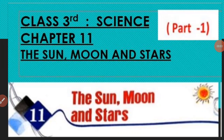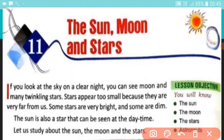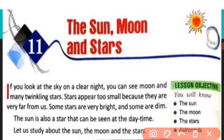Hello everyone, today we are going to start a new chapter of Class 3 Science, that is Chapter 11: The Sun, Moon and Stars. This is the first video of this chapter. Let's begin with a brief introduction. If you look at the sky on a clear night, you can see the moon and many twinkling stars.